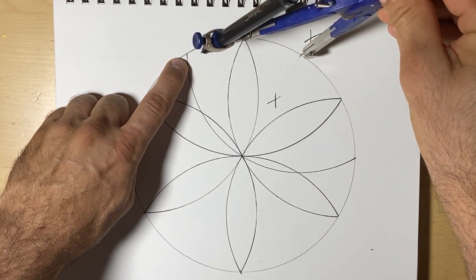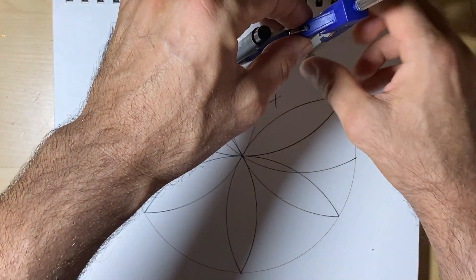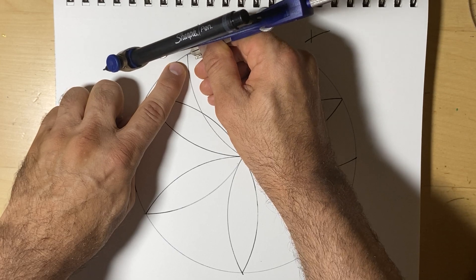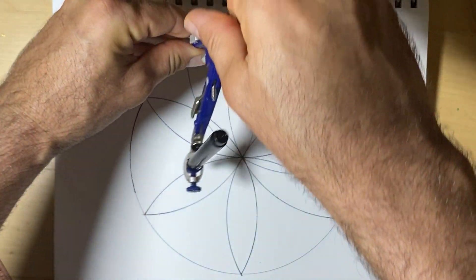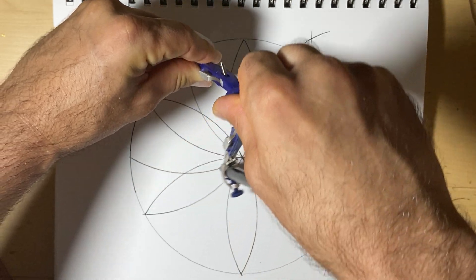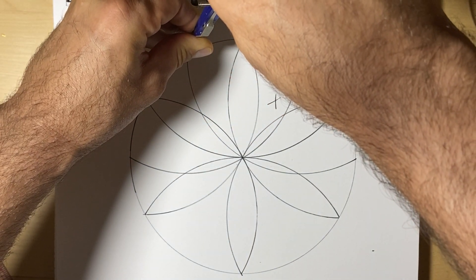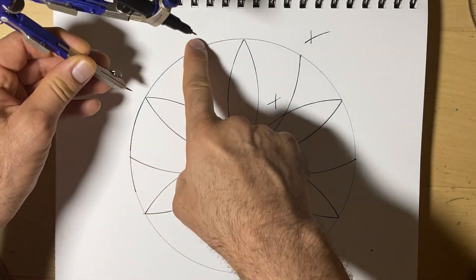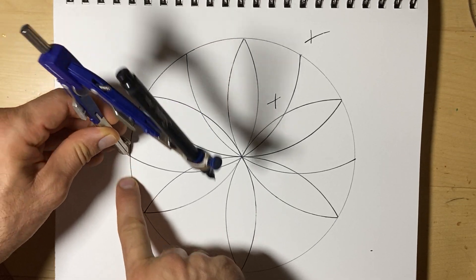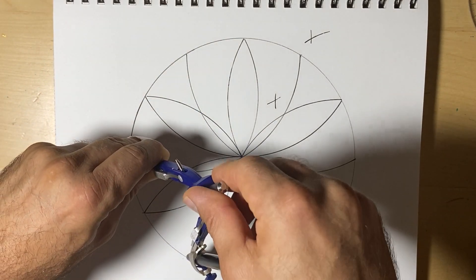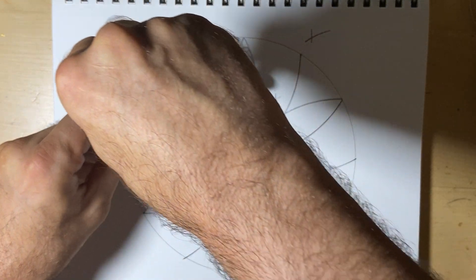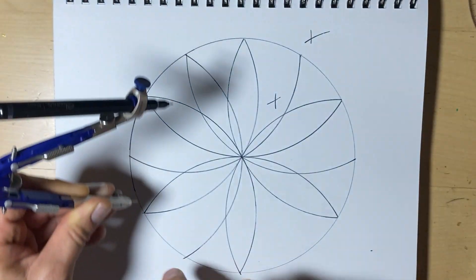And where the circle touches the new arc, we're sort of going to follow it around. And put our point of our compass on the new spot. So now it's going to go here.